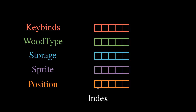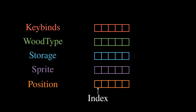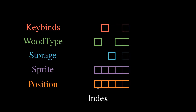We can view an entire entity by collecting all of its components at a specific index. The problem here is that not all components are used by every entity — sometimes we have trees, sometimes we have people, and sometimes we have chests. So what we can do instead is turn our array index into what we will call an entity ID, and use that in a hash map to access components and also check if they exist.